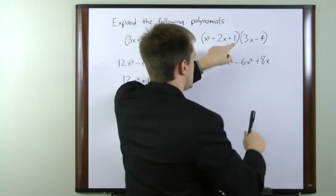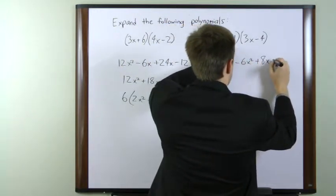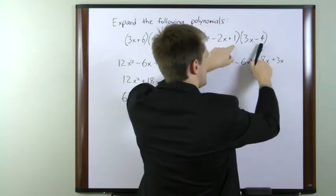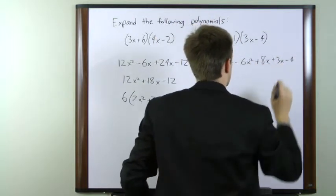Moving on to the third term here, 1 times 3x is 3x, and 1 times negative 4 is negative 4.